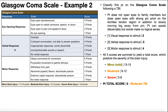For verbal response: the patient can speak discernibly, but the words make no logical sense — for example, responding 'red' when asked what year it is. The words are real and discernible (so not a two, which would be incomprehensible gibberish), but they're completely inappropriate to the question. That gives a verbal score of three.